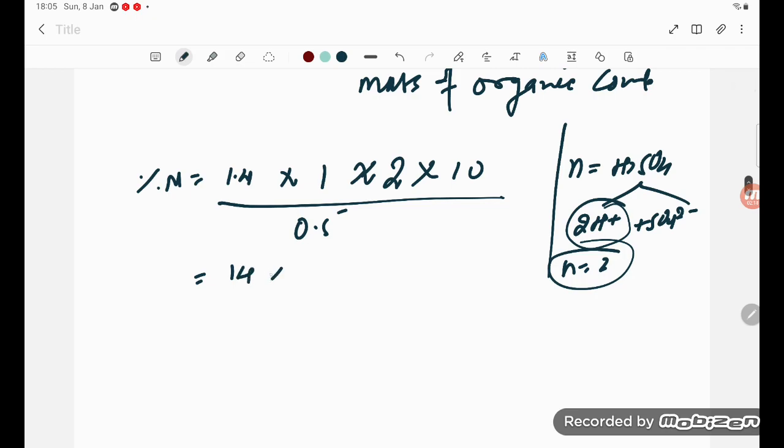So here, 1.4 × 2 × 10 divided by 0.5. Moving the decimal one digit gives us 5, so 14 × 2 × 10 / 5 equals 14 × 4, which equals 56%.